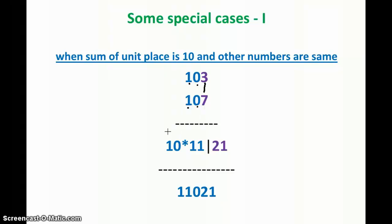To multiply 103 and 107 using this technique, you simply multiply the unit digits: 7 × 3 = 21. Then multiply the remaining part (10) by the next consecutive number (11), giving 110. So the answer is 11021. It's very simple and very effective.